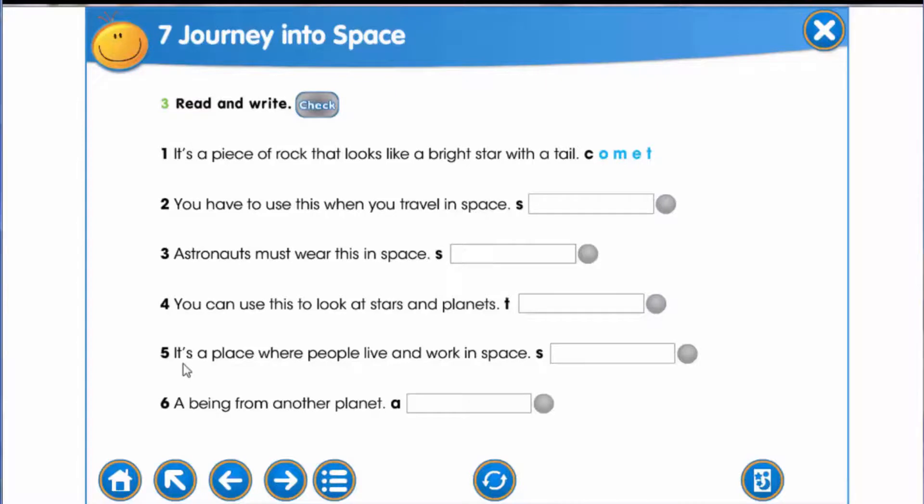Sentence five. It's a place where people live and work in space. The word starts with the letter S. And the last sentence, a being from another planet. It starts with A.